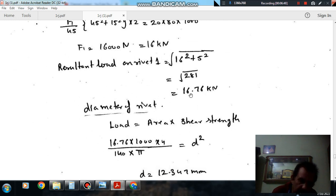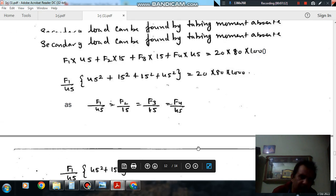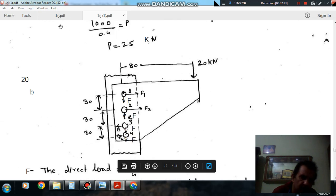And it will be multiplied by... So that is the load and area is pi by 4 d square, so that is 4 divided by pi d square, and shear stress is 140. It will be equal to d square, so d is 12.347 mm or we can say 13 mm. So answer is option B.